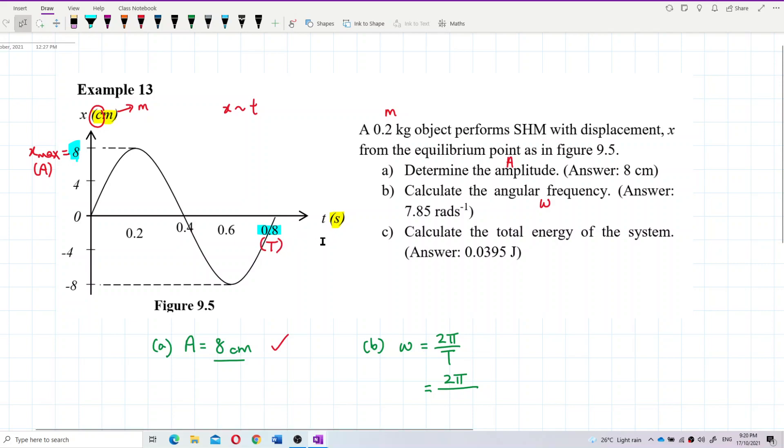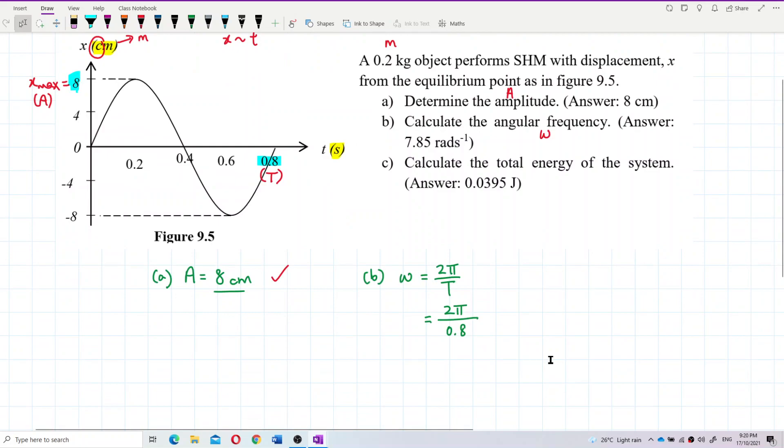2 pi over period. 2 pi over period. Period is 0.8 second. 0.8 second. That's it. 0.8 second. Calculate and what do we get? What's the answer? It is 7.85. 7.85. You can write radian per second or just per second.